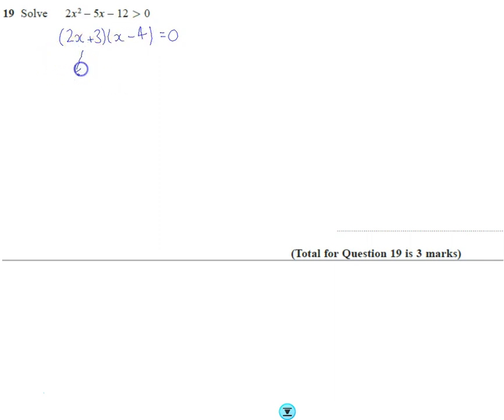So I get two solutions, and in a quadratic inequality we call these critical values. That's minus one and a half, or minus three over two, and the other critical value is x equals four. These are our critical values.